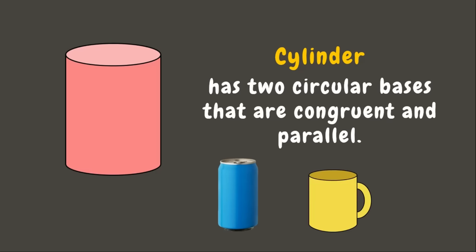Next, we have a cone. A cone has one circular base. Examples are an ice cream cone, a party hat, and a traffic cone. Lastly, we have a sphere. A sphere has no base or face because it does not have any flat surface. Examples of spheres are a ball, a globe, and an orange. What have you learned today? Comment it down below!